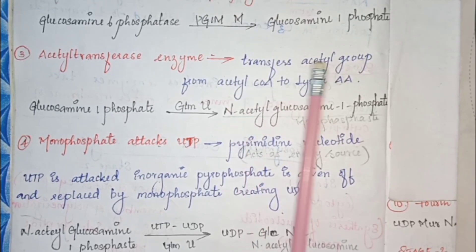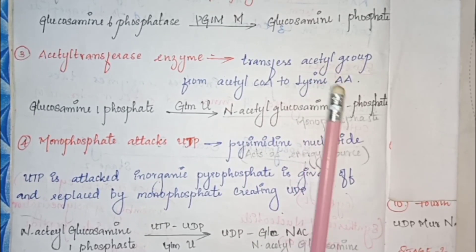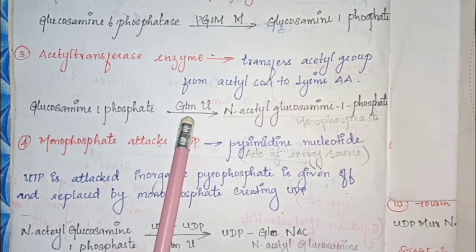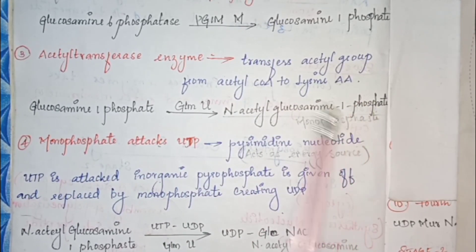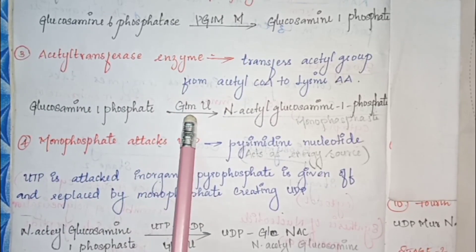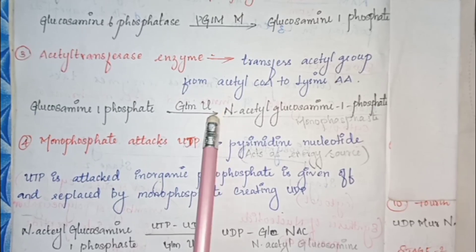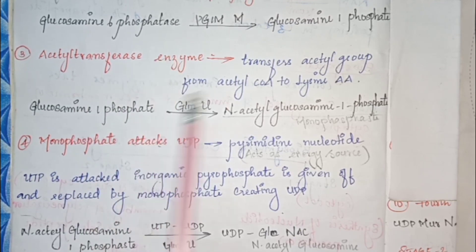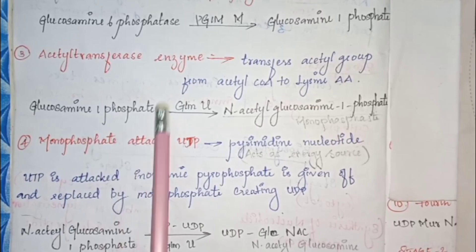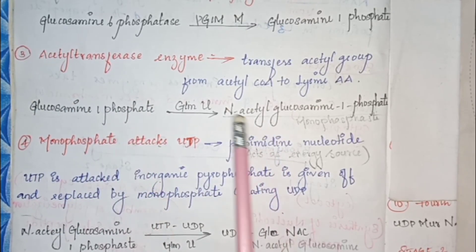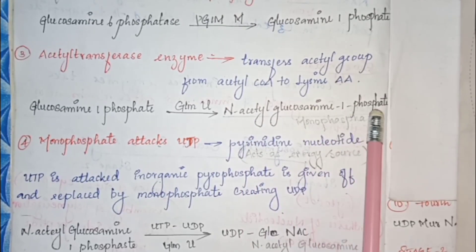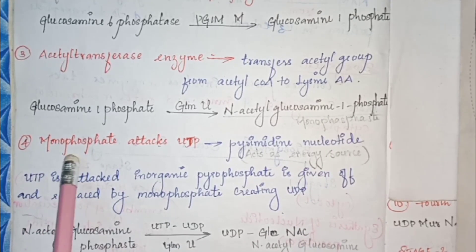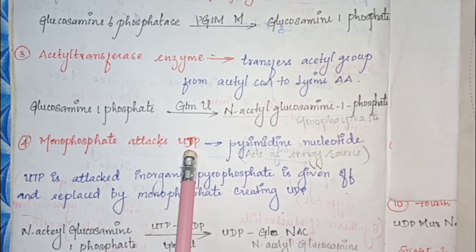The acetyl transferase enzyme transfers an acetyl group from acetyl-CoA to the compound. Glucosamine-1-phosphate is converted to N-acetylglucosamine-1-phosphate with the help of this acetyl transferase enzyme. This N-acetylglucosamine-1-phosphate is called the monophosphate form.